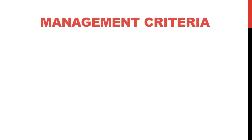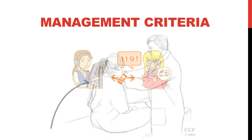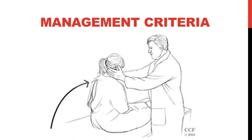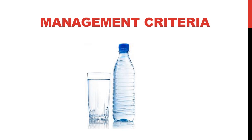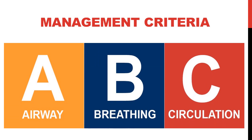So, to avoid the toxicity complications, we should be aware of the management criteria. First, we should call the ambulance right away. Then, try to keep the individual awake, preferably in a sitting position, not lying down, and do not let them walk. If the patient is conscious, give them water. If not, you should check their ABCs — the airway, the breathing, and their circulation.